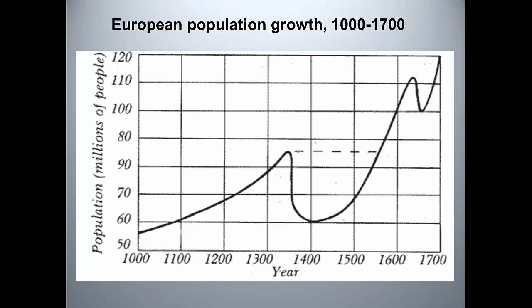We're going to talk about what happens in the miserable 14th century, and it's not just the plague. But for now, note the very impressive population growth between 1000 and 1300 CE. In some places the change was even more dramatic. The population of England, for example, is thought to have almost quintupled in the Romanesque era, from around 1 million to around 5 million people.